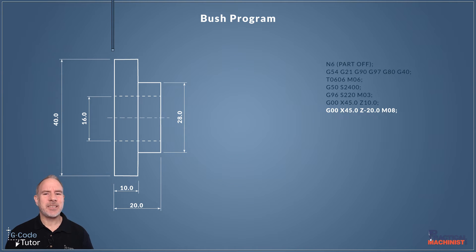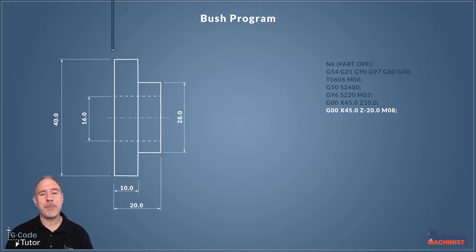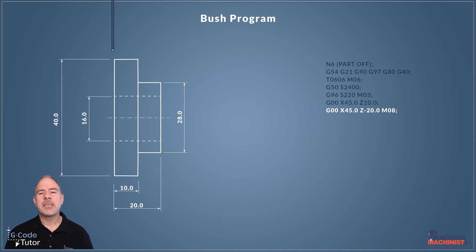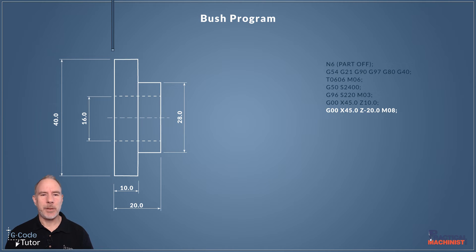We don't need to add G00 again on this line because it's still active from the line above — we can omit it, the same as the X45. I've added both here just to show that nothing bad happens if we do add them; the machine reads it and carries on. Z minus 20 millimeters takes us to the back end of our part. Our part is 20 millimeters long, so because I've zeroed the correct edge of my parting off tool I can put in the exact length of the part and it will move to that position.